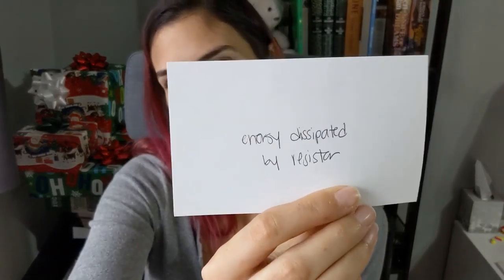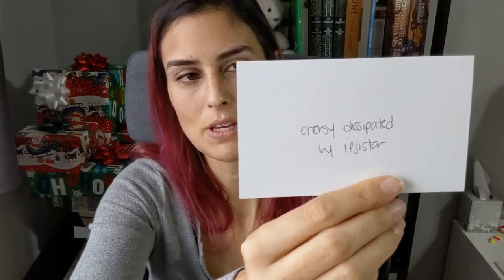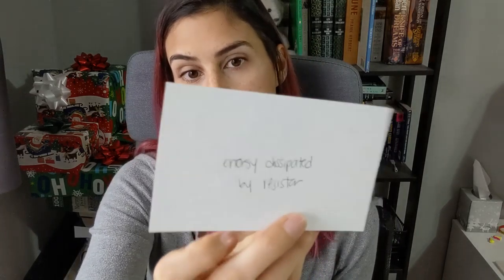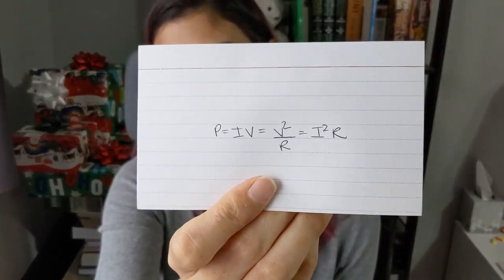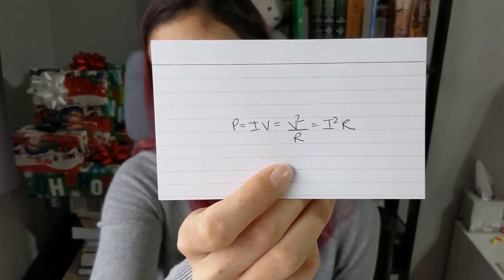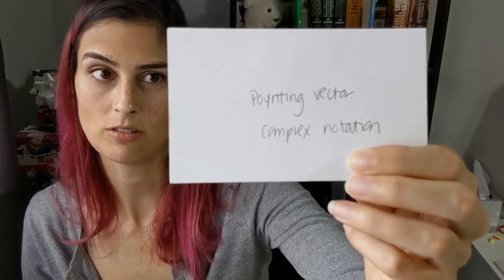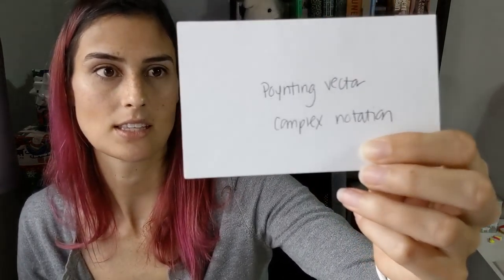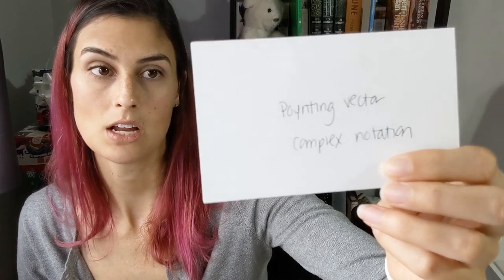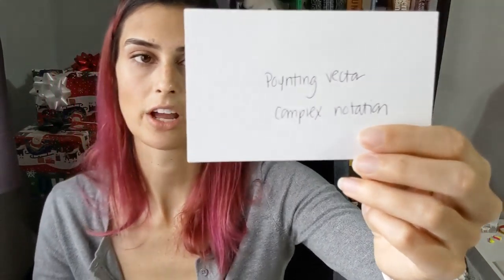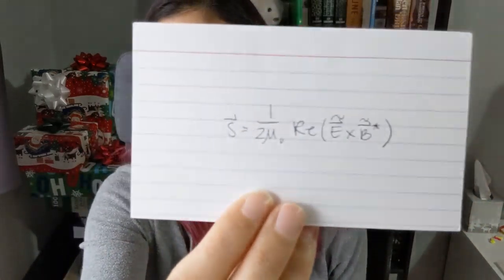Energy dissipated by a resistor: P equals IV, which also equals V squared over R, which also equals I squared times R. The Poynting vector in complex notation: S equals 1 over 2 mu naught times the real portion of E cross B complex conjugate, where those are the wave expressions for E and B.